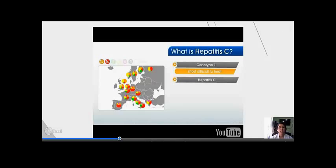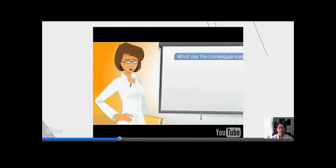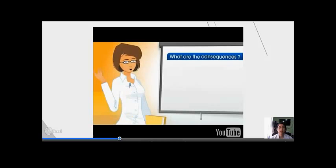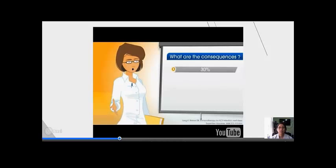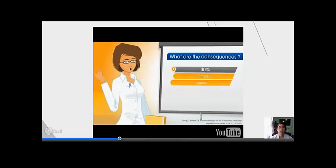Hepatitis C has also been associated with numerous hematological, renal, dermatologic, rheumatic, autoimmune, and brain disorders. Chronic Hepatitis C can result in serious long-term health problems. Approximately 30% of individuals will develop progressive liver disease, including cirrhosis and liver cancer. Chronic Hepatitis C is the most common reason for liver transplants in Europe.